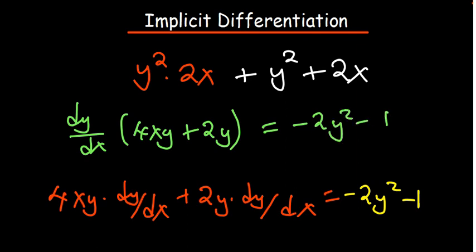So, to make things easier, we divide by these both sides. So that we just remain with negative 2y squared minus 2 over 4xy plus 2y. And that basically summarizes the idea of implicit differentiation.